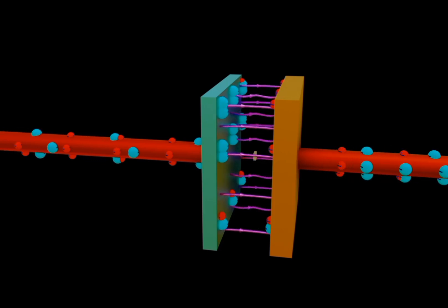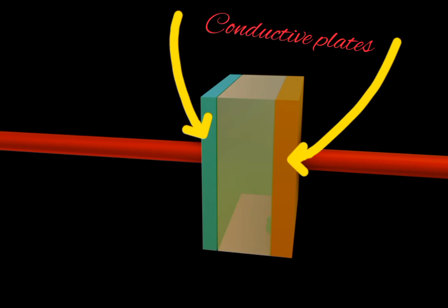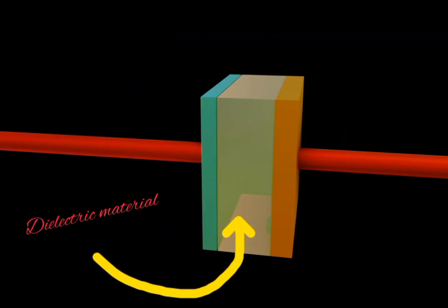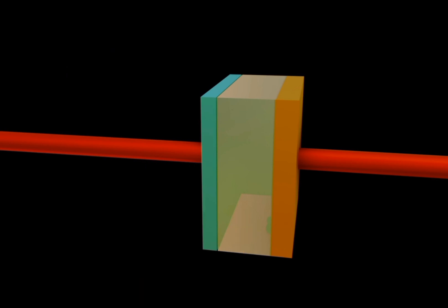Basic construction of a capacitor consists of two parallel conductive plates and a dielectric material, which is also considered as an insulator.